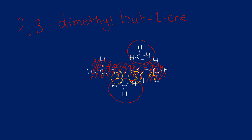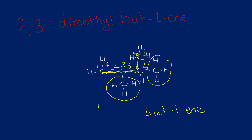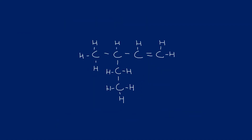If we were to name it using the other valid route, we get exactly the same name. Going that way, numbering 1, 2, 3, 4 in either direction still gives us but-1-ene since it's still a four-carbon chain containing the double bond. The side chains are still at positions two and three, so it's still 2,3-dimethylbut-1-ene. As long as your longest chain contains the functional group, if there is more than one possibility you'll end up with the same name, so don't panic.